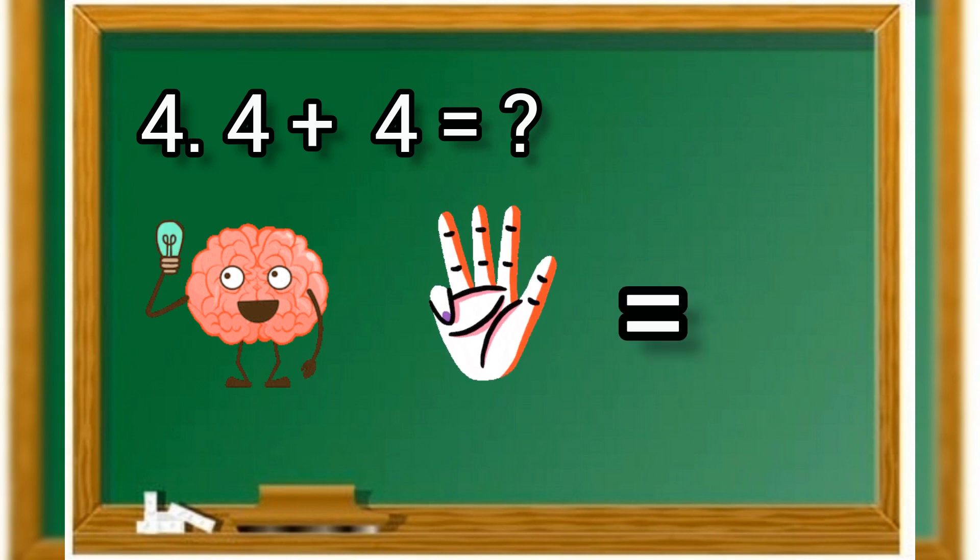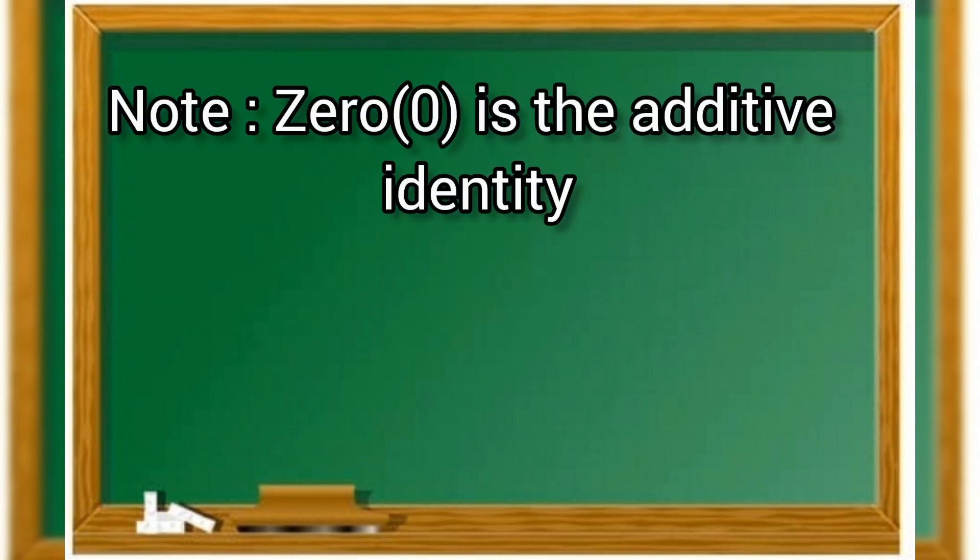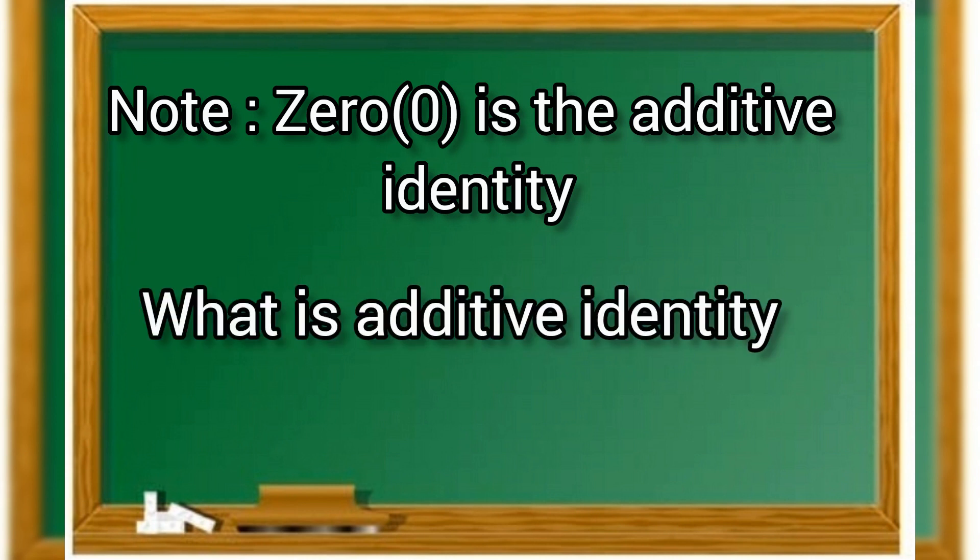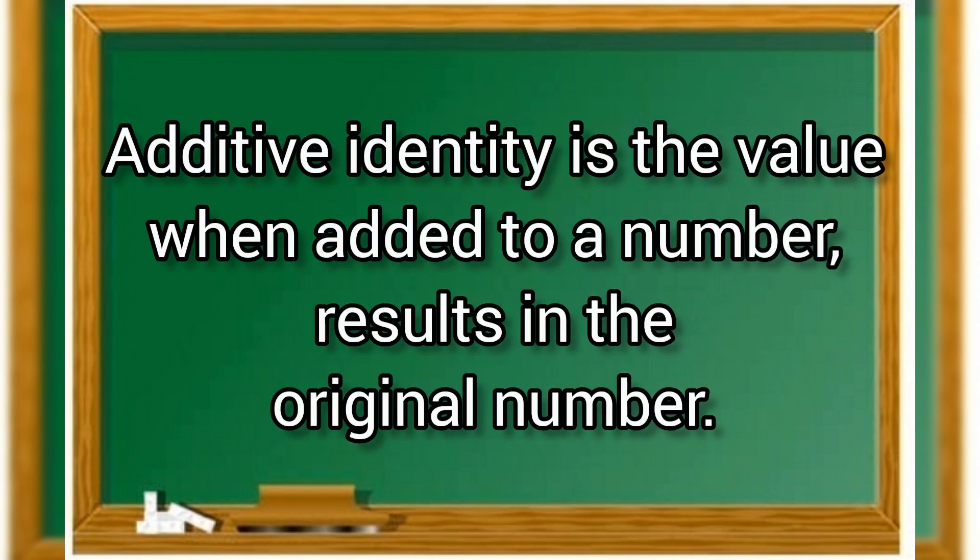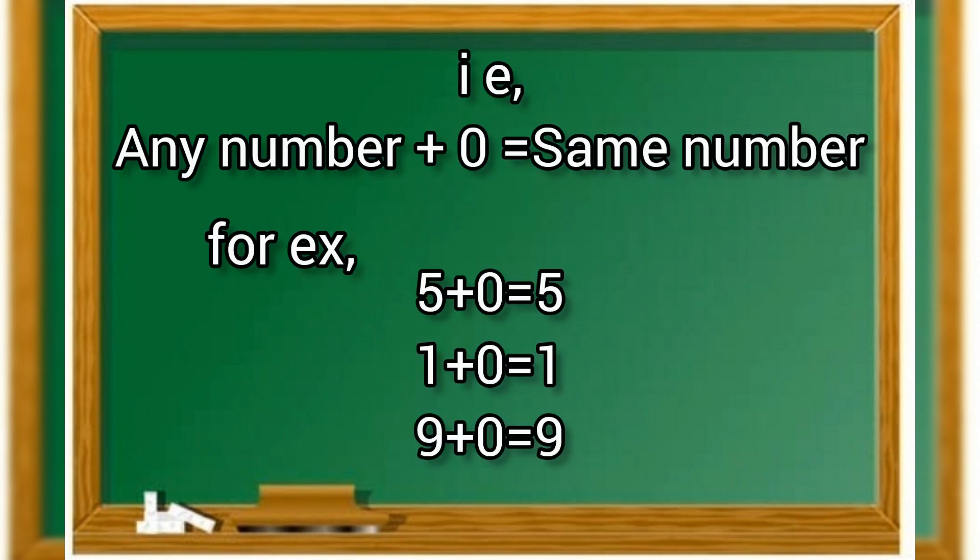Let us make a note that 0 is the additive identity. Now what is additive identity? Identity is the value when added to a number results in the original number.